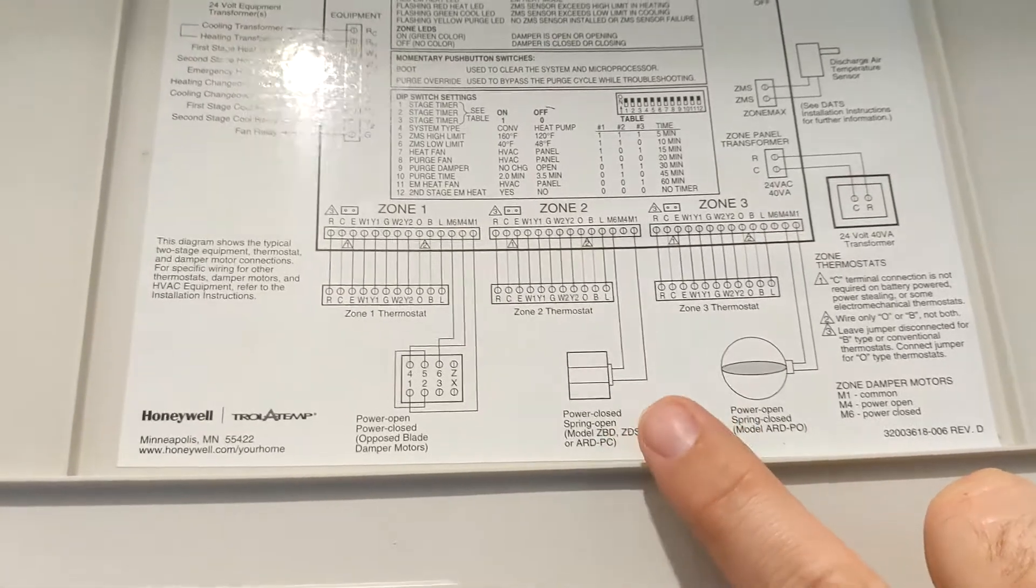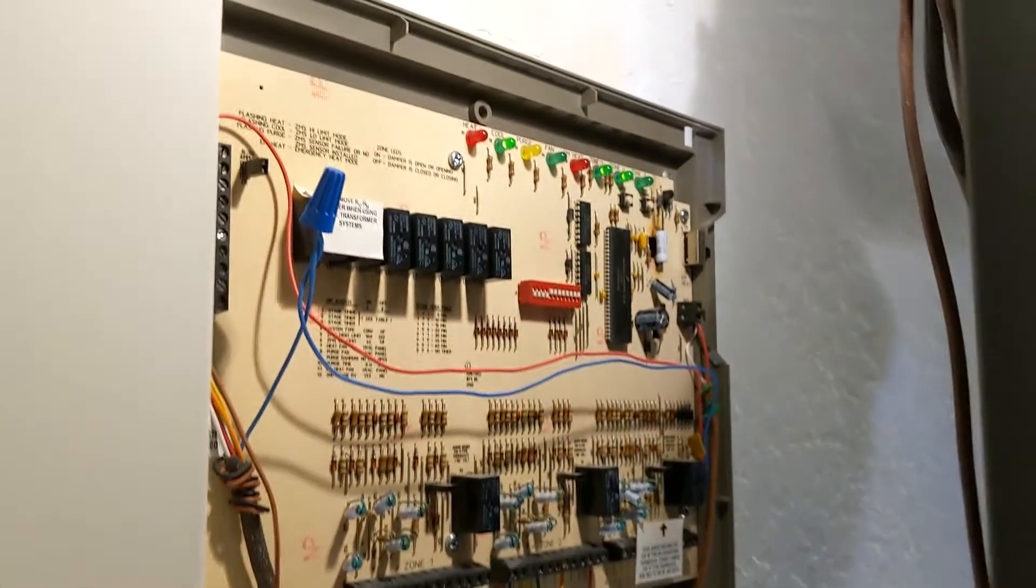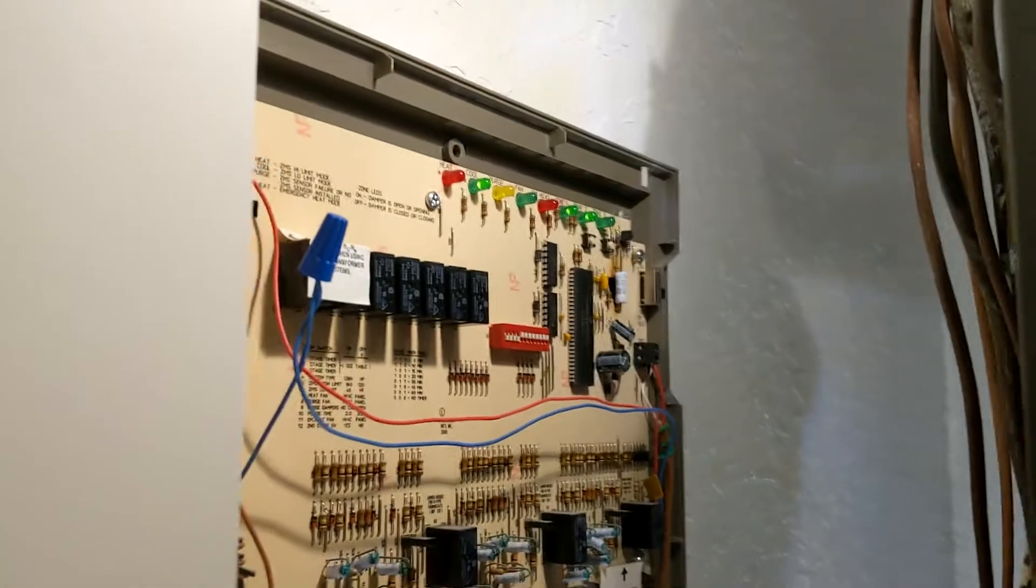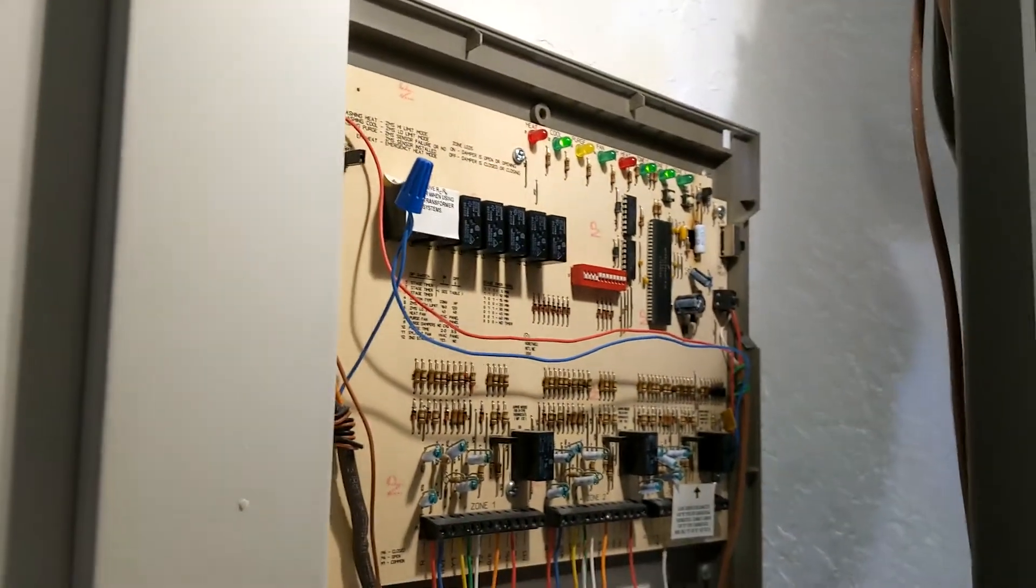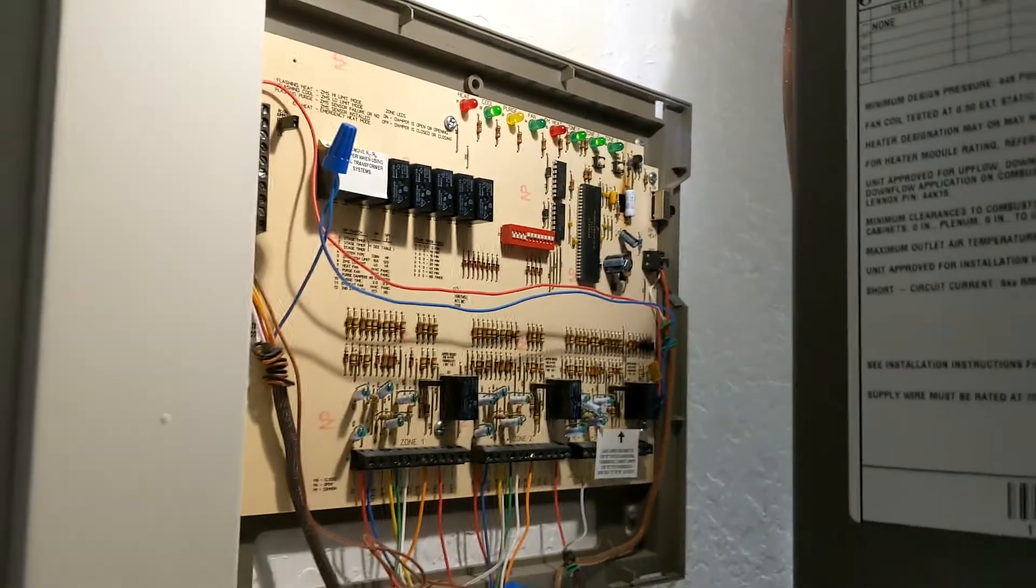So what that's referring to is when there's no power to that damper, it's going to remain open. That's what we wanted to do because our unit kept freezing up when zone two would operate. It's just some malfunction with the zoning board.